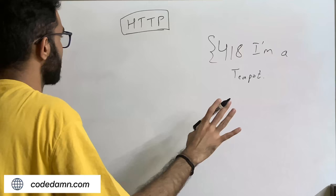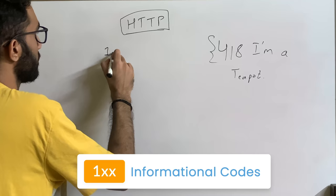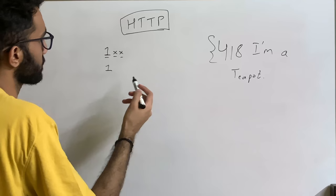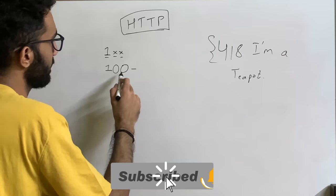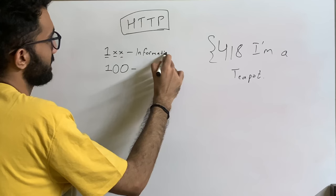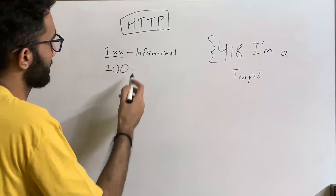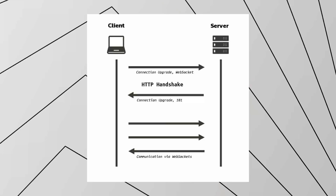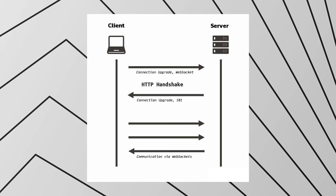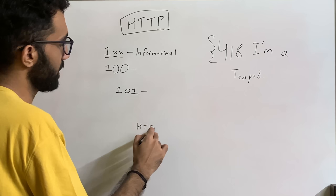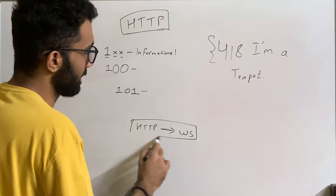Starting with the 100 range: 1XX stands for any status code which starts with 1 and then has two digits. This range is for informational responses as the MDN docs say. The main use case I've seen is status code 101, which is used when you upgrade an HTTP connection to a WebSocket connection, which we discussed in our WebSocket versus HTTP video.